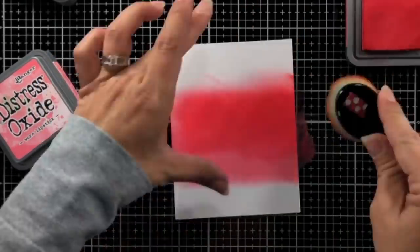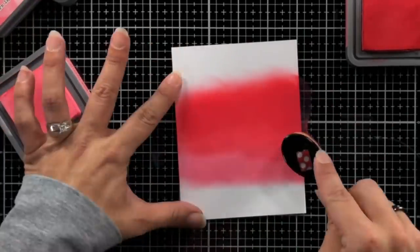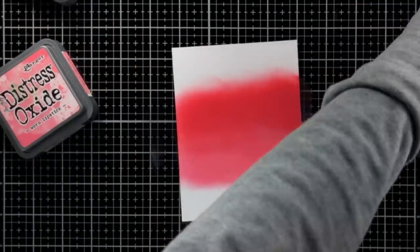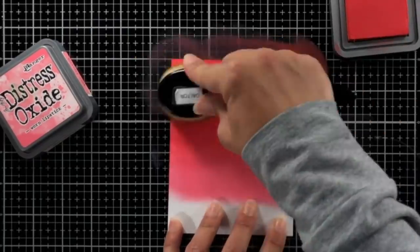I'm not going all the way down to the bottom because I know I'm going to have my rooftop there, so I don't need to ink blend that part. So starting with the worn lipstick, then the festive berries, and then I'll switch into the aged mahogany, and I'll have a really nice gradual transition of colors.